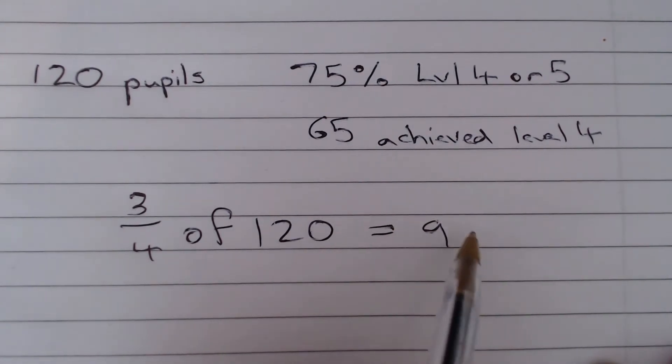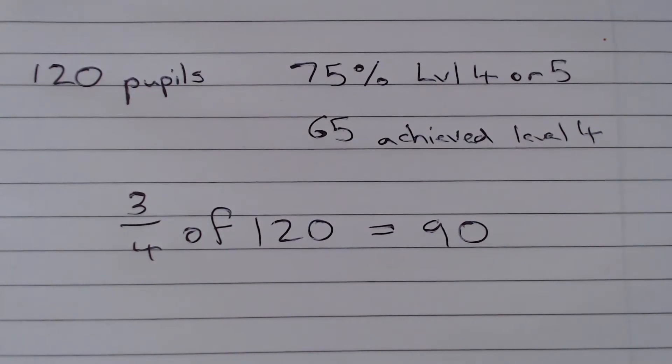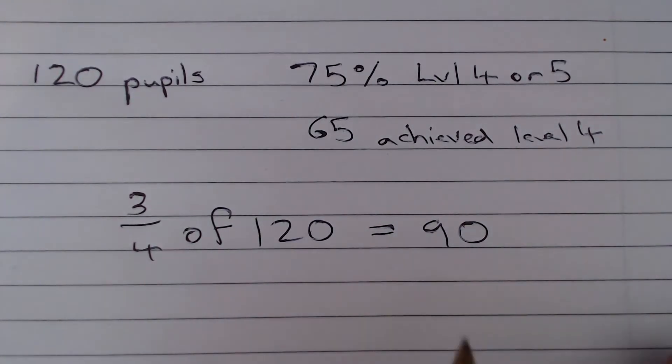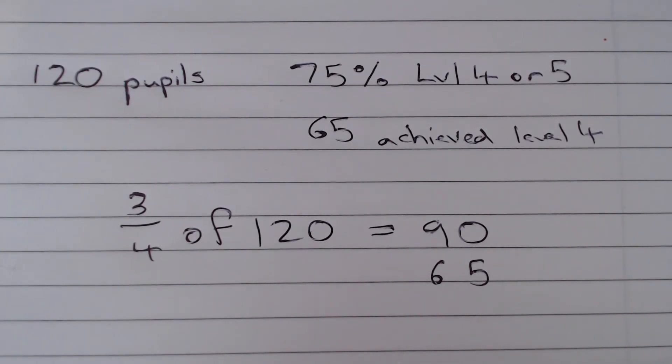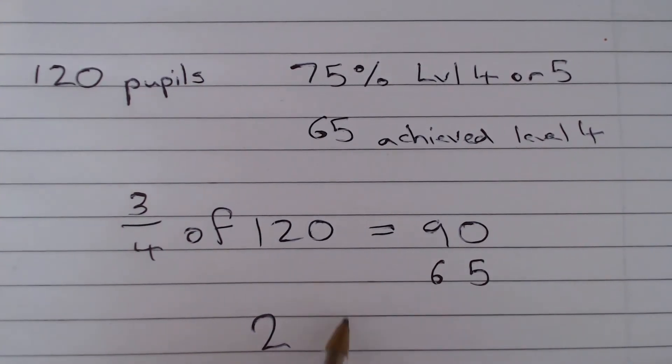So we can see that 90 pupils achieved a Level 4 or Level 5. And if we do 90 minus 65, that gives us 25. So the answer to this question is 25.